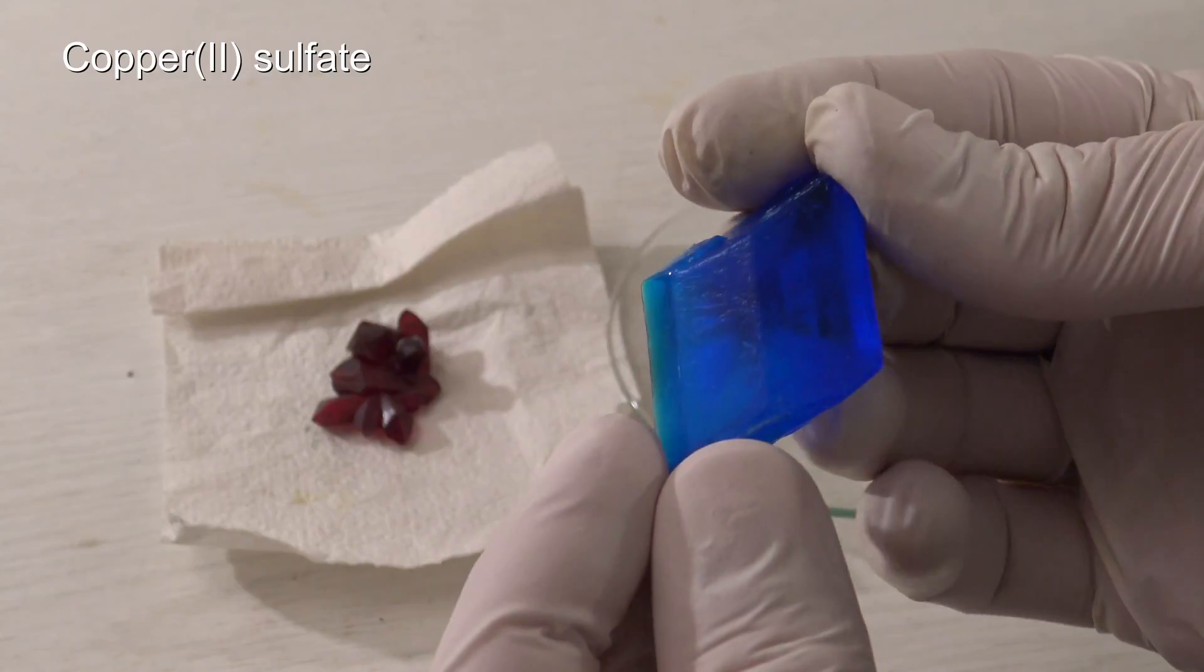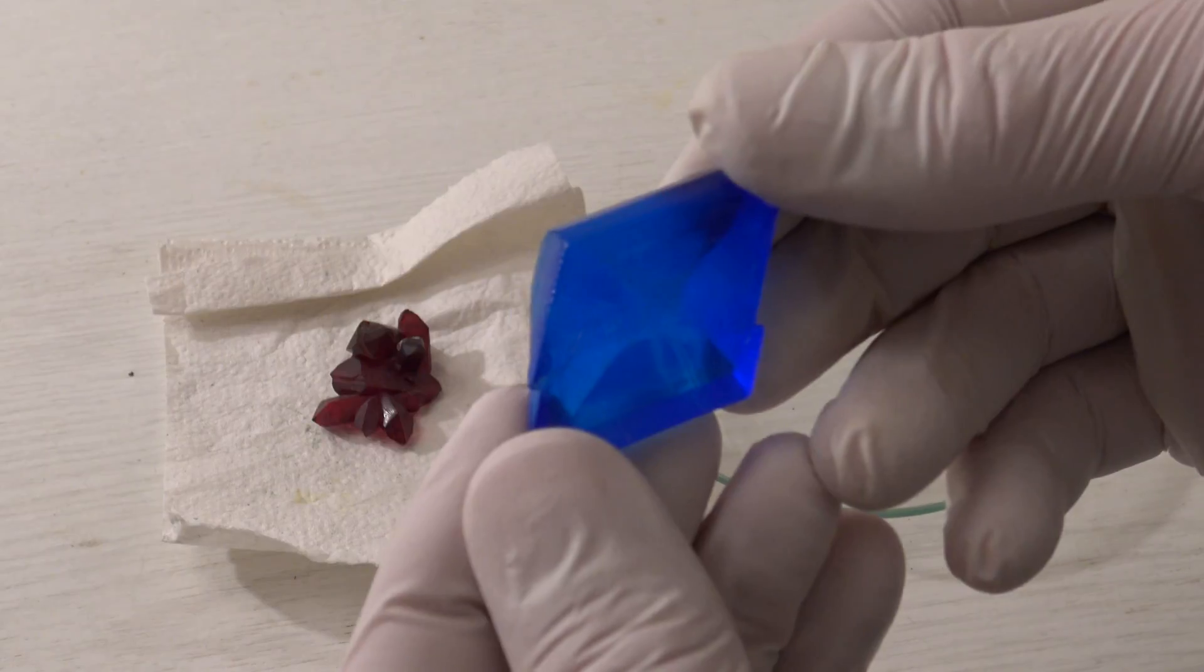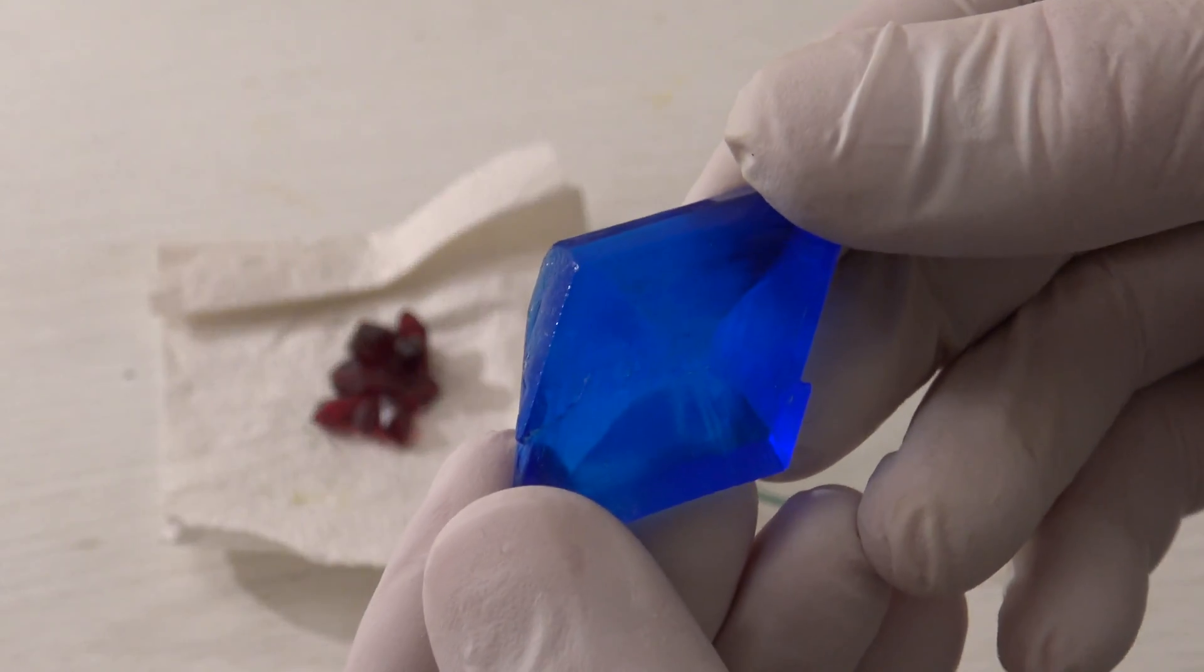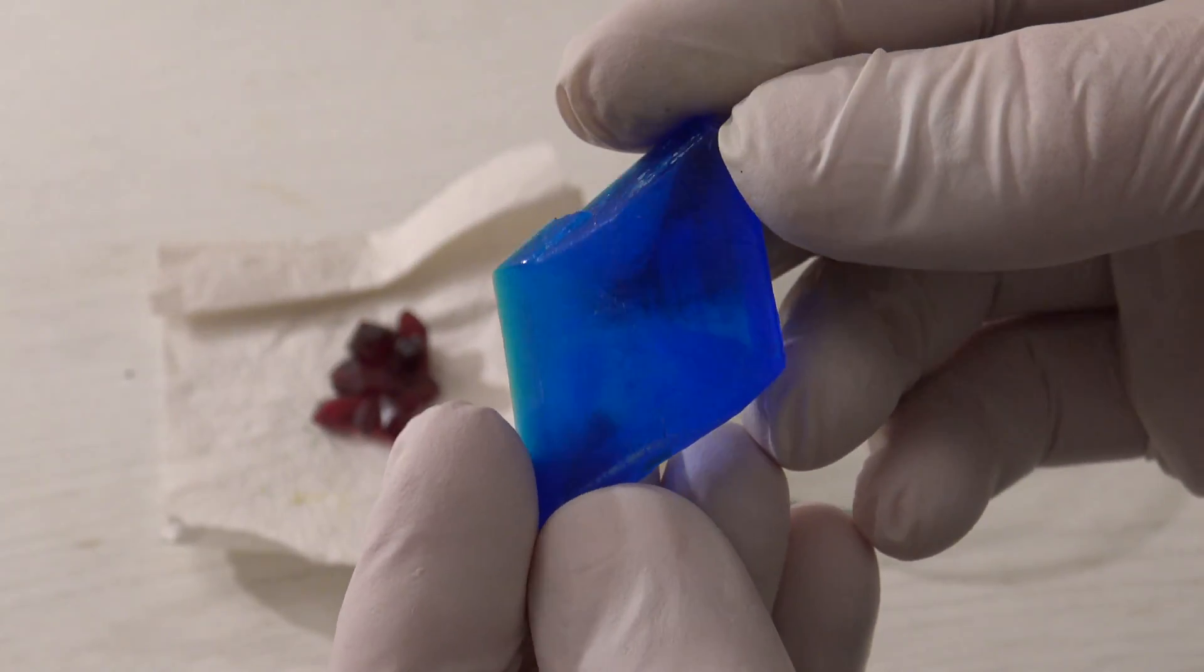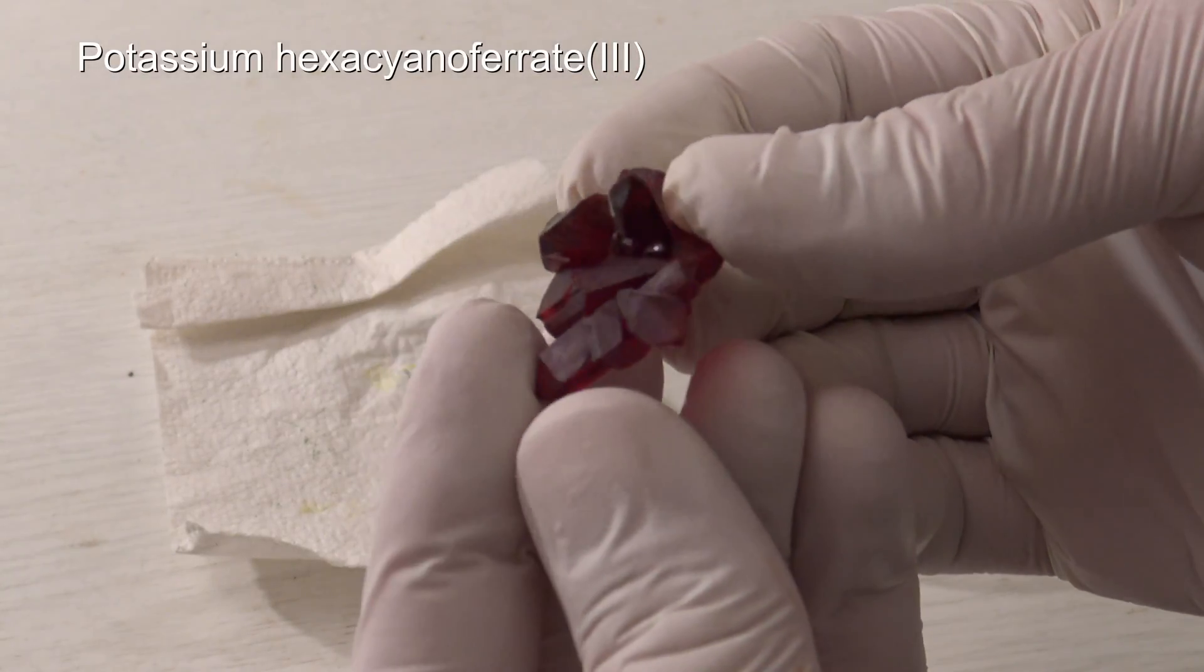The second crystal is made of copper sulfate, which is more transparent in the visible light than in the infrared light. The first crystal was potassium hexacyanoferrate 3.